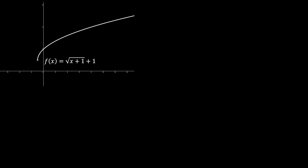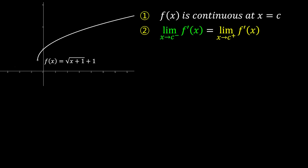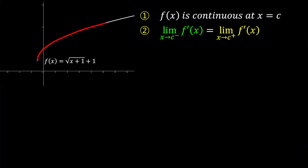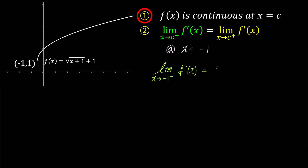The last problem is f of x equals square root of x plus 1, plus 1. We need to check if this function is differentiable by considering the two conditions. The graph is continuous for all x greater than negative 1. Now, what about the second condition? If we closely observe the left-hand point of this graph, the coordinates are negative 1, 1. This means x equals negative 1 is a starting point, and for values of x less than negative 1, f of x is not defined. Can we determine the limit of f prime of x as x approaches negative 1 from the left side? Since there are no values of x less than negative 1, we cannot even calculate the left-hand limit. Therefore, the second condition cannot be satisfied, and this function is not differentiable at x equals negative 1.